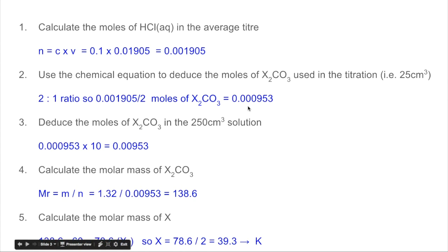The moles of X₂CO₃ in the original solution is ten times that, so we just lose a zero. The molar mass is mass over moles. So that 1.32 grams that was dissolved divided by the moles is giving us a molar mass of 138.6.